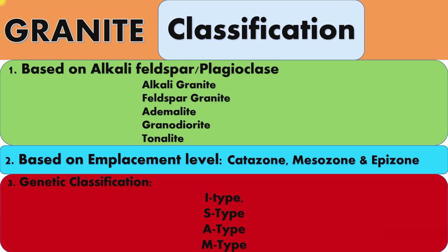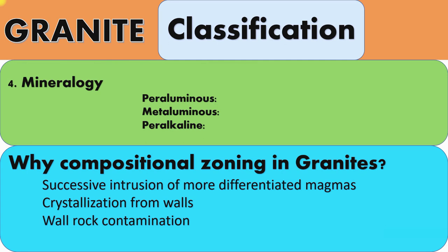The fourth classification is based on mineralogy — specifically alumina saturation: peraluminous, metaluminous, and peralkaline. In peraluminous granites, Al₂O₃ > (K₂O + Na₂O + CaO). In metaluminous, (K₂O + Na₂O + CaO) > Al₂O₃ > (Na₂O + K₂O). In peralkaline granites, (Na₂O + K₂O) > Al₂O₃.